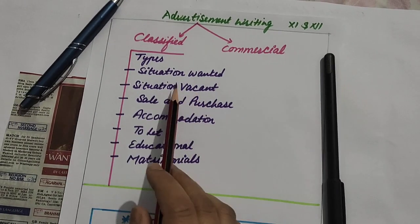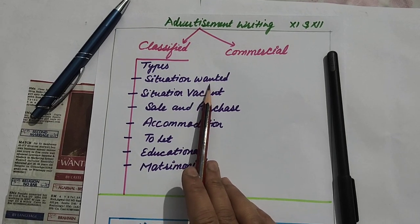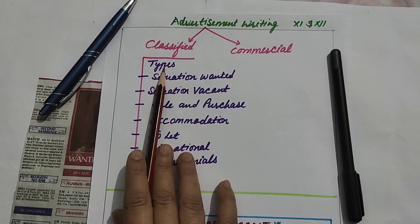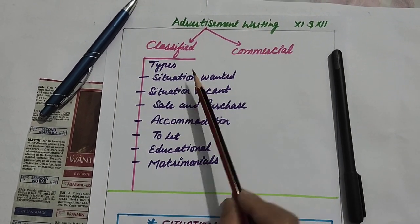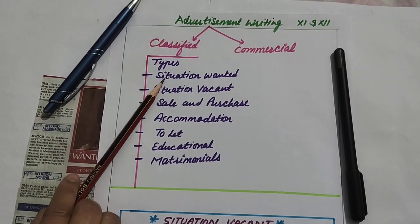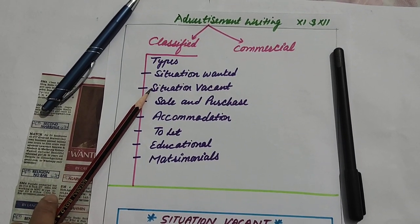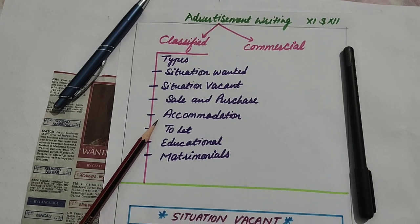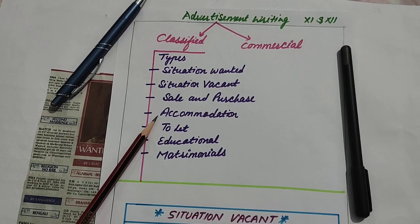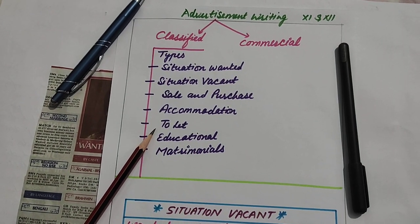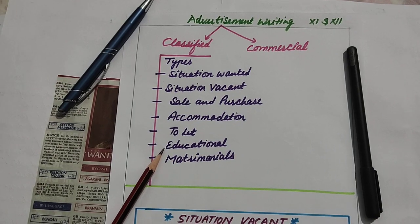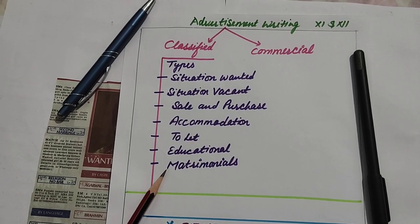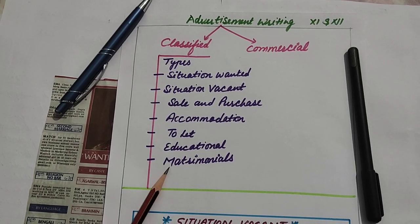Now let's learn about classified advertisements. There are different types: number one is situation wanted, number two is situation vacant, number three is sale and purchase, number four is accommodation, next is to let, next one is educational, and the last one for your syllabus is matrimonials.